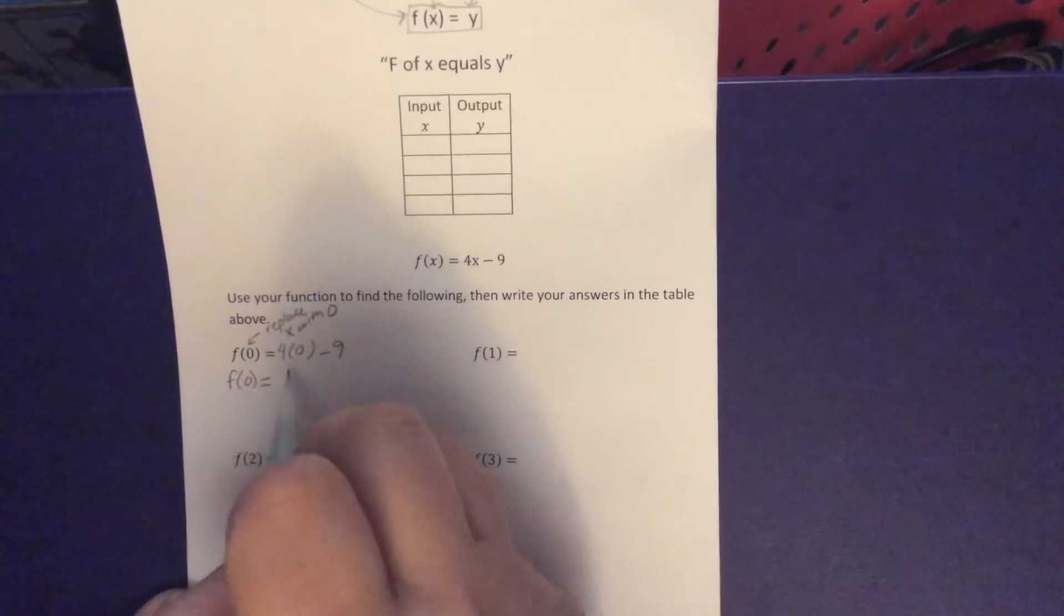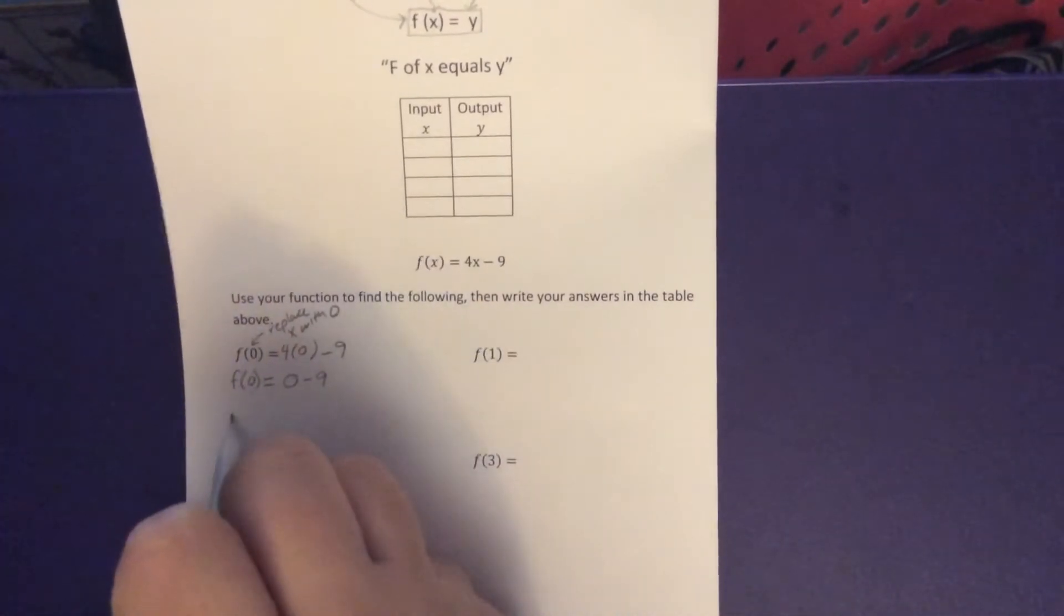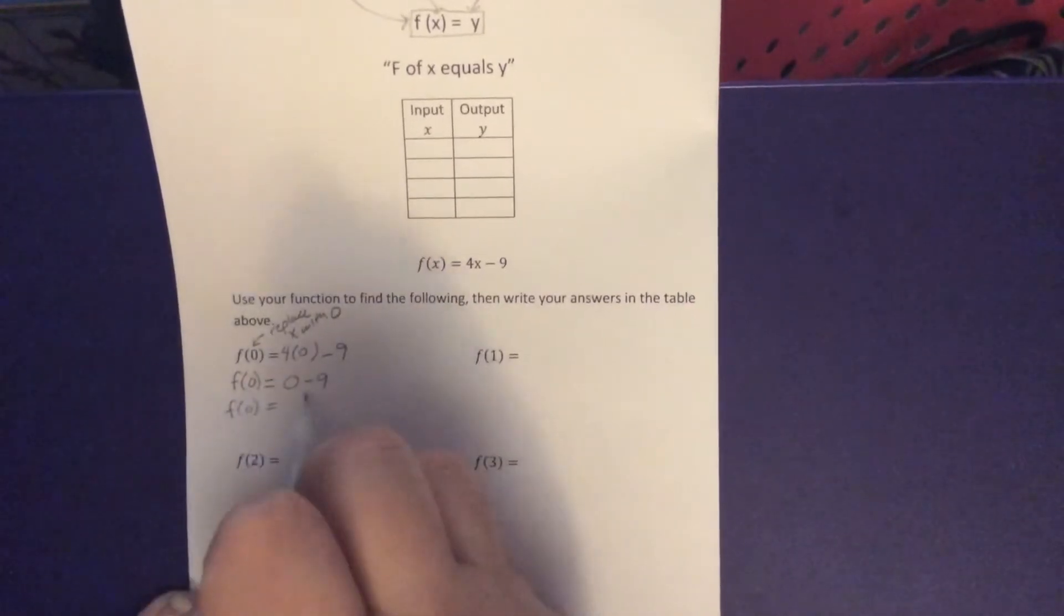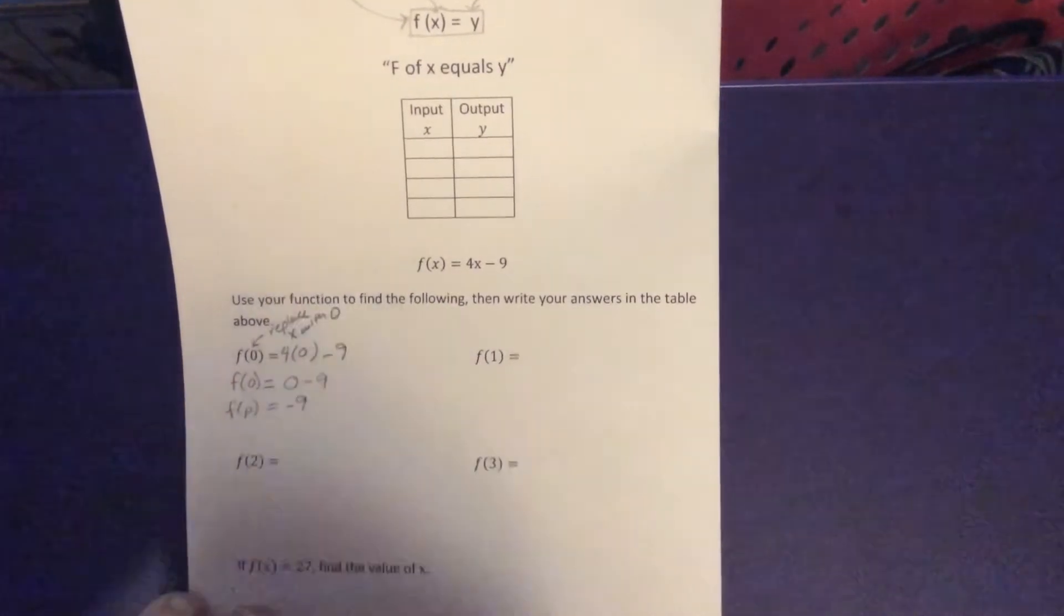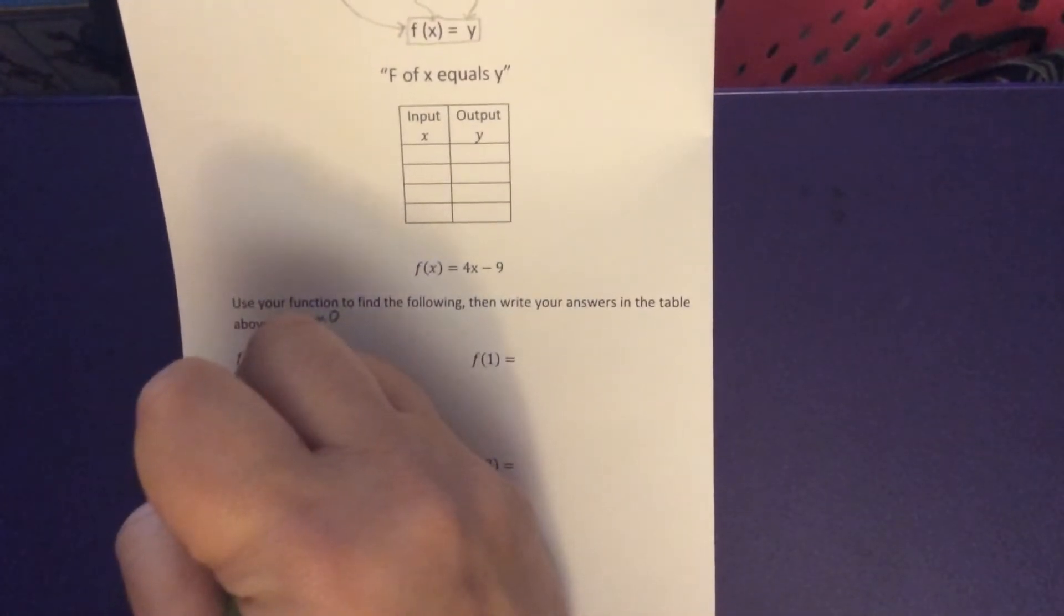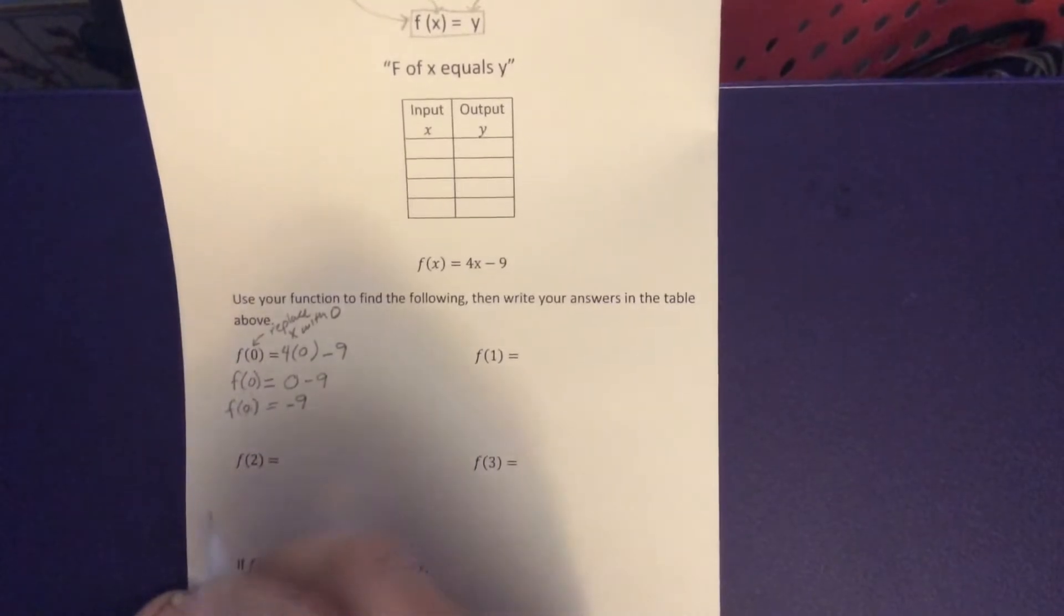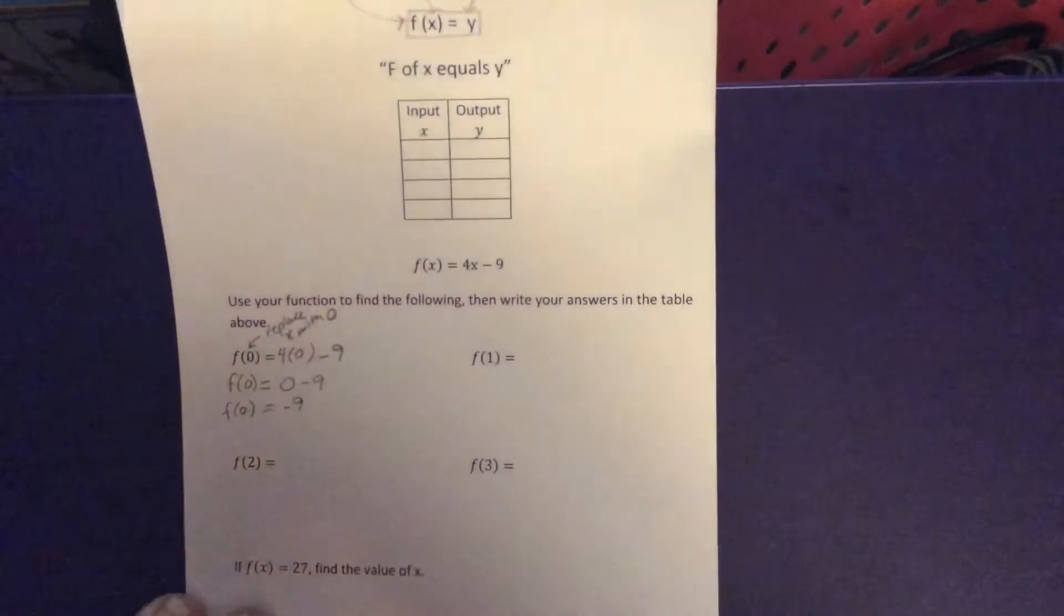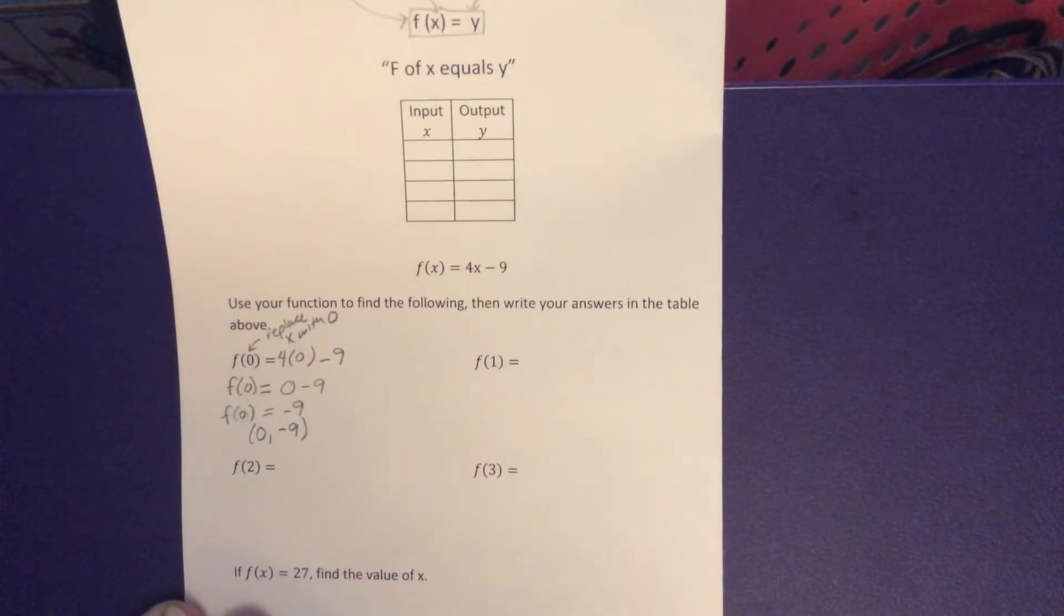So 4 parentheses 0 minus 9. I'm going to do 4 times 0 which is 0. I'm going to subtract 9. 0 minus 9. F of 0 equals 0 minus 9 which is negative 9. So that means when a 0 goes into the function, negative 9 comes out of the function. So I can also represent this using a set of ordered pairs. Now this wasn't asked of me in these directions but this will help me understand what it is that I've done. When the 0 was my input, negative 9 was my output so we get that ordered pair out.